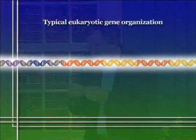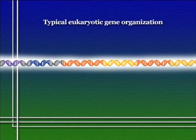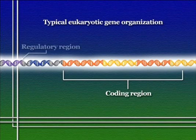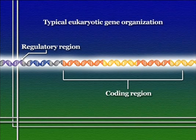We call the part of the gene that actually contains the code for the protein the coding region. Each gene also has associated with it what we call regulatory regions — regions that are generally upstream from the coding region. Before the RNA polymerase that would transcribe the gene gets started, it has to start at this upstream point. These regulatory regions represent the lock that we have to unlock in order for the gene to be transcribed.